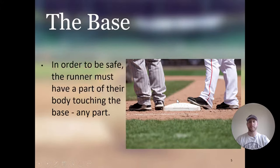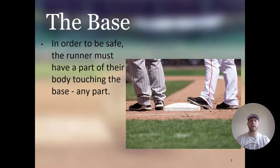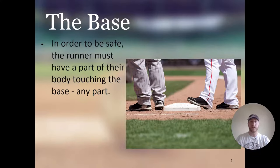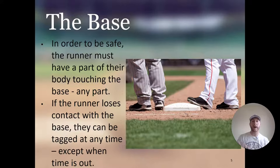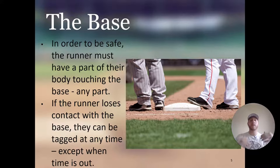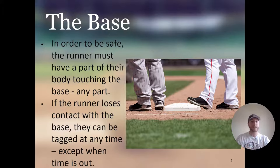In order to be safe, the runner must have any part of their body touching the base — their shoe, knee, hand, elbow; if any part is touching the base, they are safe. If the runner loses contact with the base, they can be tagged at any time, except when time is out. When the umpire calls time, the runner is allowed to step off, tie their shoe, etc. But if the play is going and time is not out, and they lose contact with the base, they can get tagged and will be out.